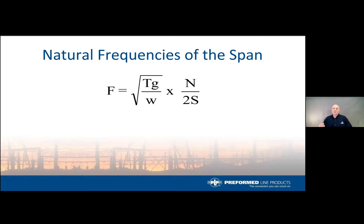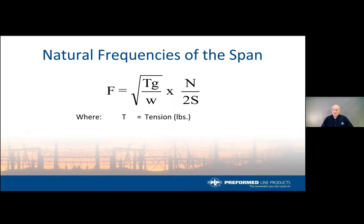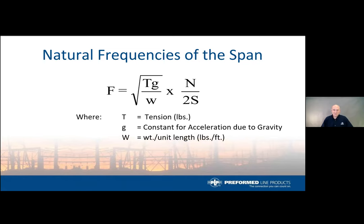Now we need to understand the natural frequencies of the system. To truly understand how and when a conductor will vibrate, we need to identify these natural frequencies to know what to do to stop it. There's a formula that helps identify natural frequencies using conductor tension, the gravitational constant, the number of loop legs in the span, and the span length.